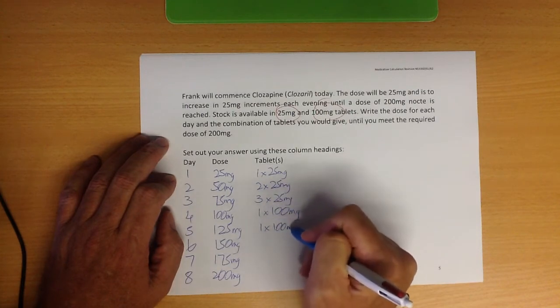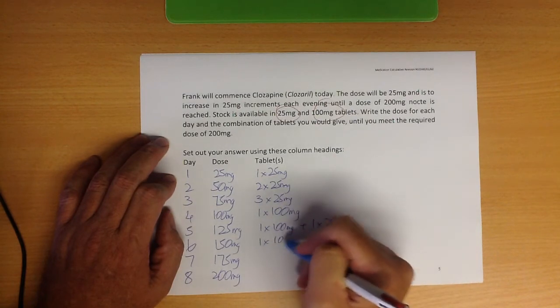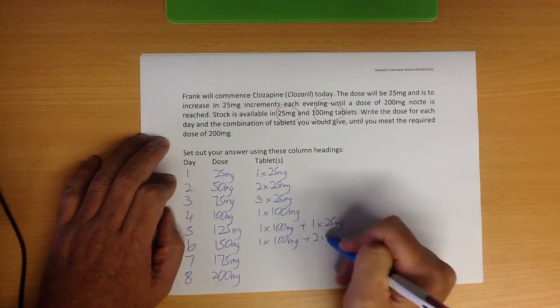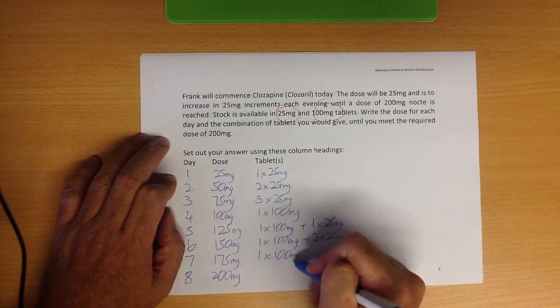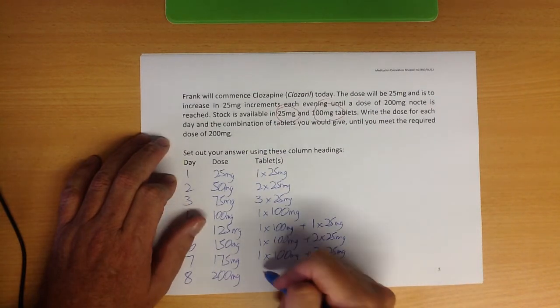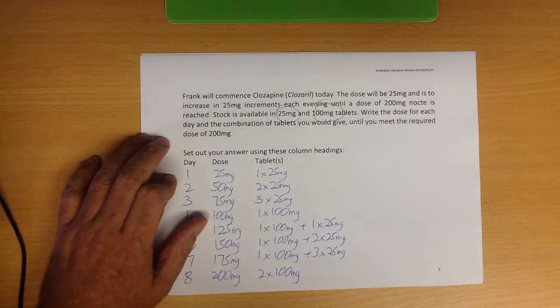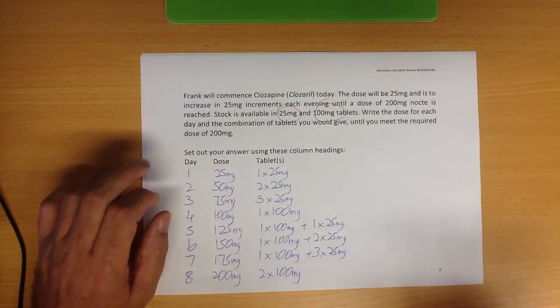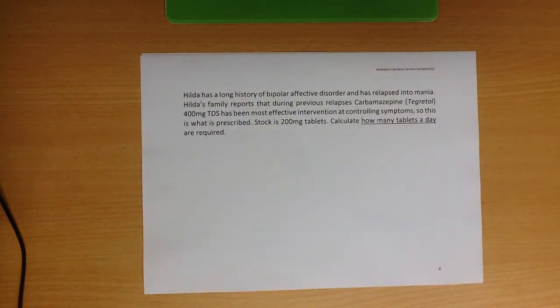Then 1 by 100 milligram tablet for day 4, then 1 by 100 milligram plus 1 by 25 milligram, then 1 by 100 plus 2 by 25 milligrams, then 1 by 100 milligrams plus 3 by 25 milligrams. And here you just explain to Frank that even though you're only getting two tablets today, they're bigger dose tablets, so you're actually getting more of the clozapine today than you were yesterday. You want to be really clear that he understands that, because after all it's about him and his medications and his body.